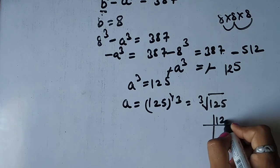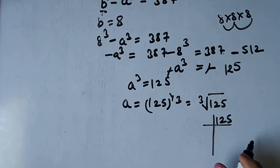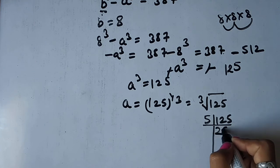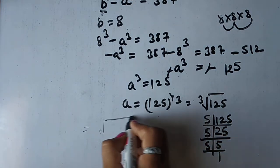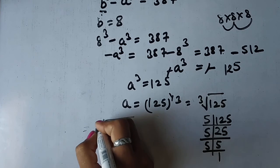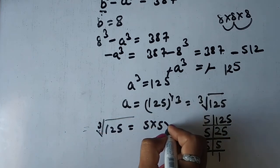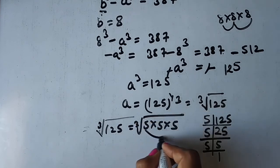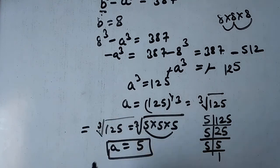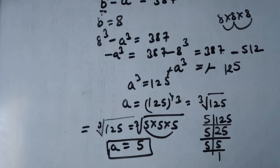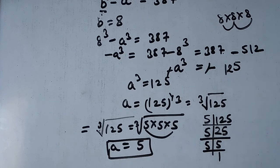a ka cube root nikaalenge — prime factorization se pair banate hain. 125 ko 5 se divide: 25, phir 5: 5, phir 5: 1. Toh cube root of 125 = 5 × 5 × 5. Teeno ka pair ban gaya, toh bahar aayega 5. Toh a = 5. Yahi nikalna tha — chote wale number ka cube root 5 hai. Bahut important question hai. Next video mein milenge next chapter ke saath. Bye!